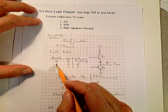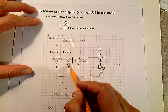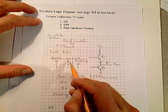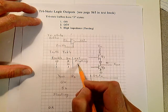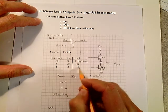If the enable is a one, high active, then the buffer works the way it normally would work. A zero in, a zero out. A one in, a one out.